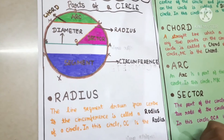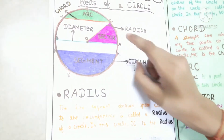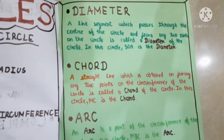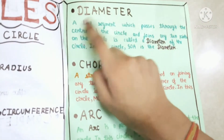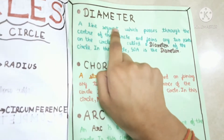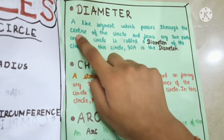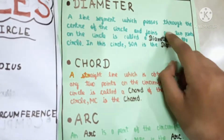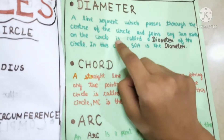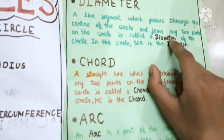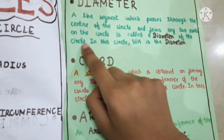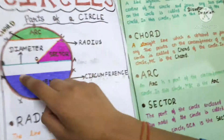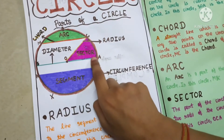Radius: the line segment drawn from the center to the circumference is called a radius of a circle. In this circle, two points on the circle — A is the diameter. This is diameter.